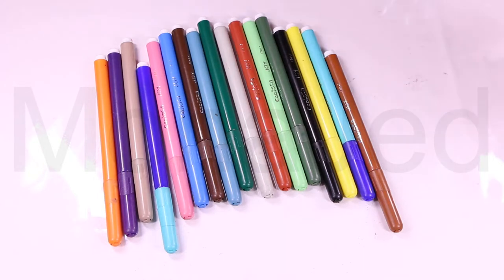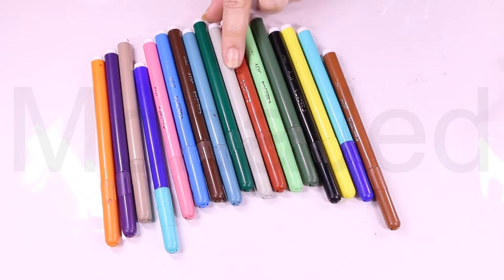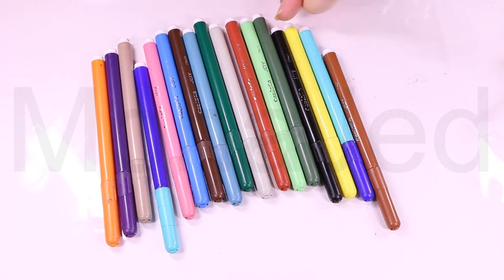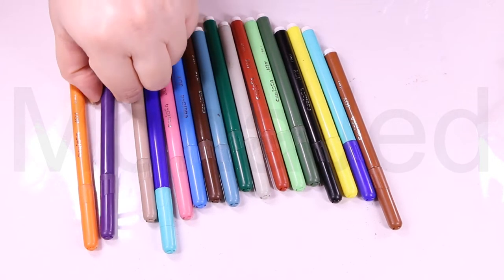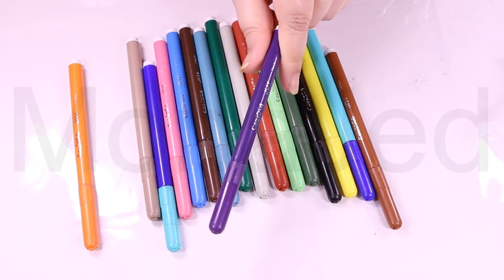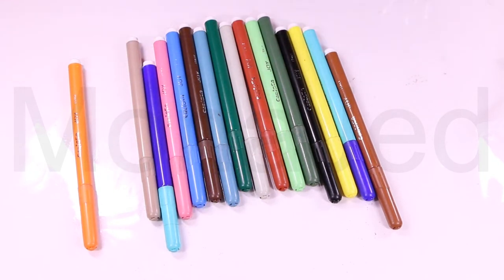Now, let's choose a marker to dissect. Hmm, which one should I choose? Uh-oh, it's the purple one. Now, we are going to remove the ink points of this marker. Whatever that means.